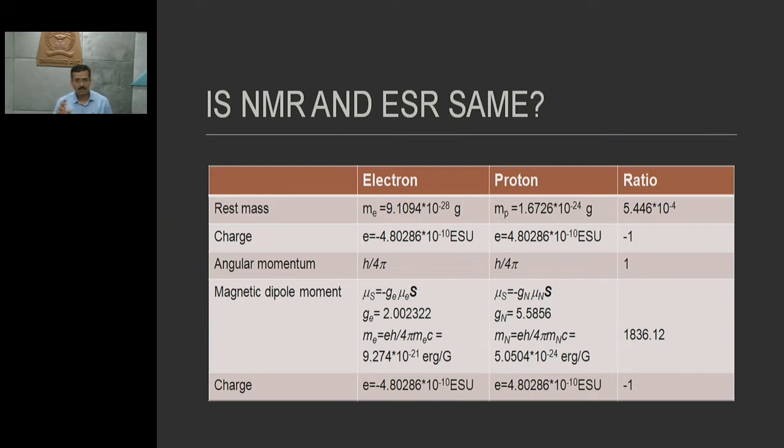This table gives an idea about how we compare their mass with respect to ratio. Charge, we compare. Angular momentum - both are the same, ratio is one. Magnetic dipole moment, we calculate with these equations - the ratio is 1836.12. It tells us about how they depend with respect to electron and proton.